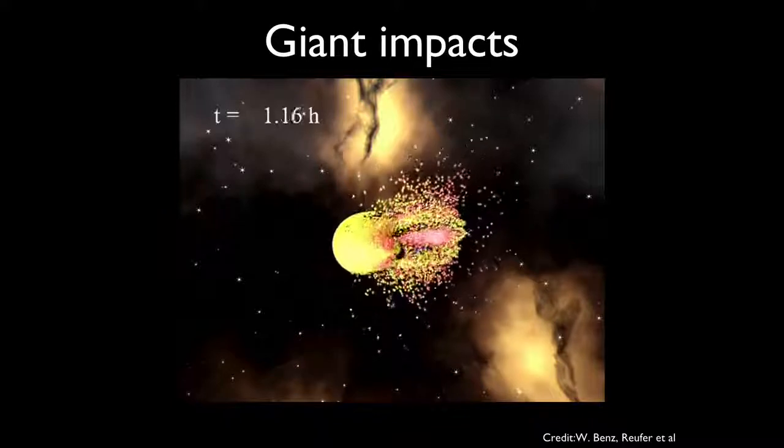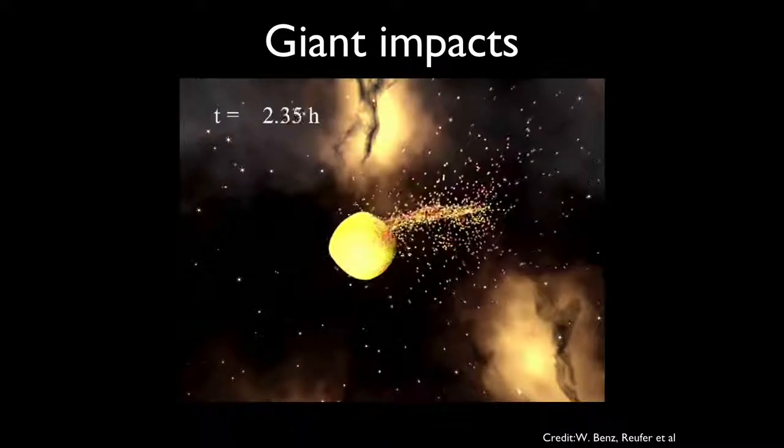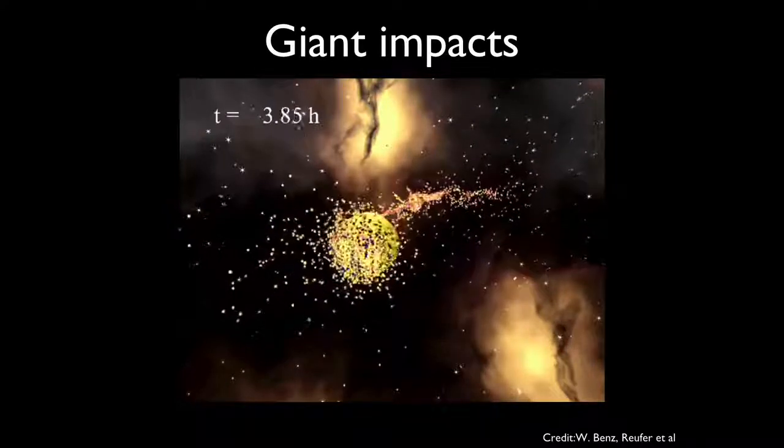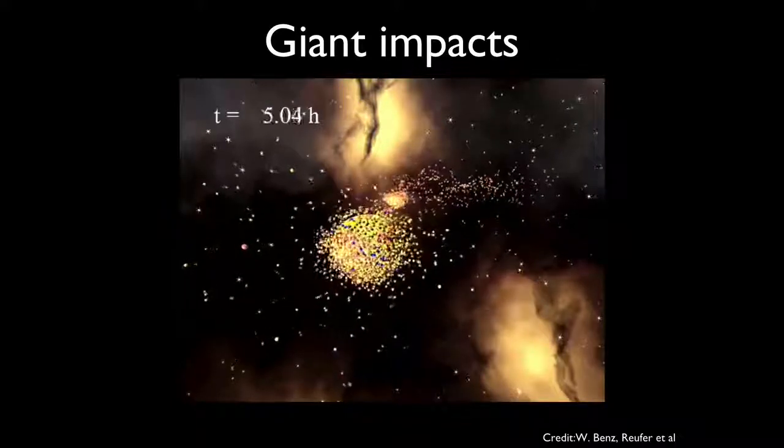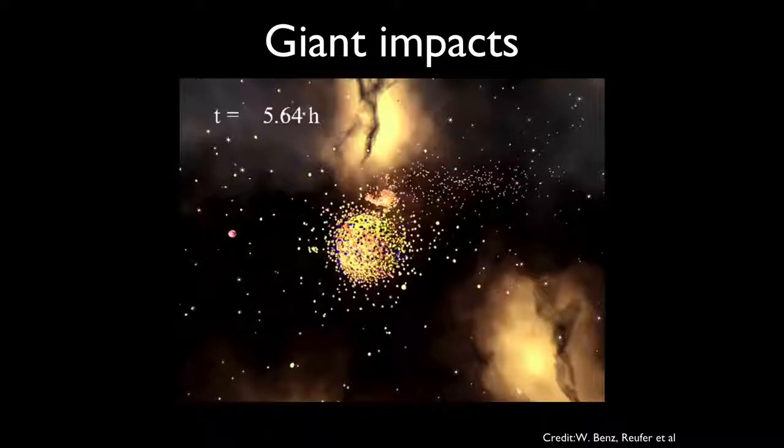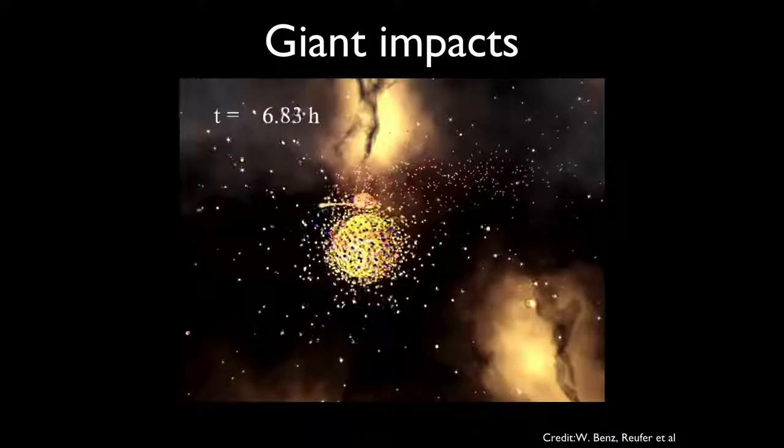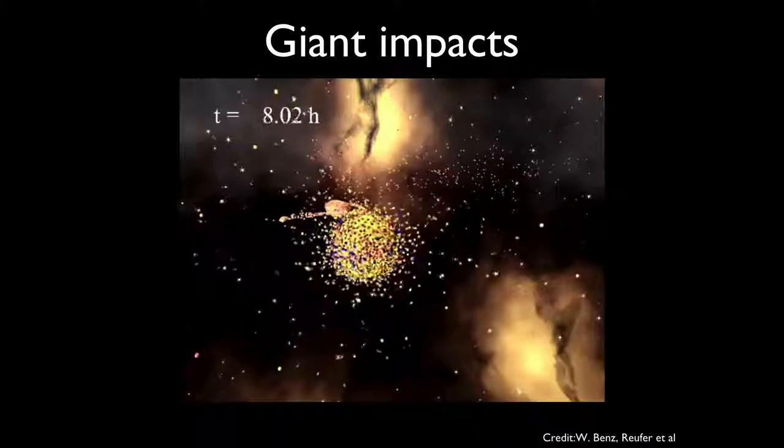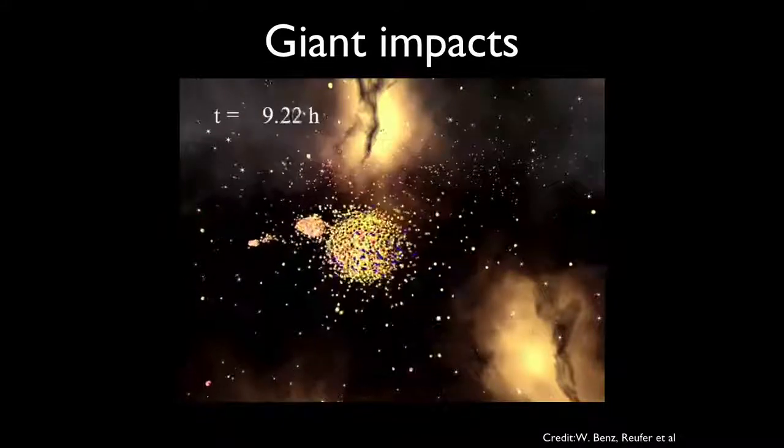So the growing Earth underwent at least five or ten of these impacts, we think. And the last giant impact was with a similar sized body, something at least the size of Mars, bashing into the growing Earth. And that impact created a lot of debris. The debris launched out this disk of stuff, and we think that our Moon grew from that debris. So these giant impacts are the last violent phase of rocky planet formation.